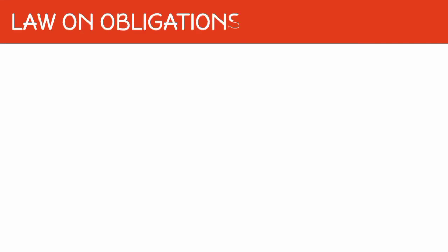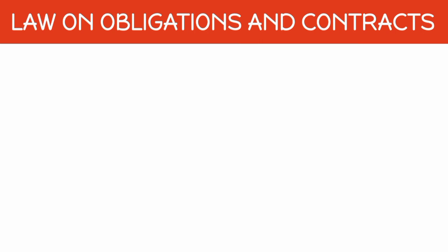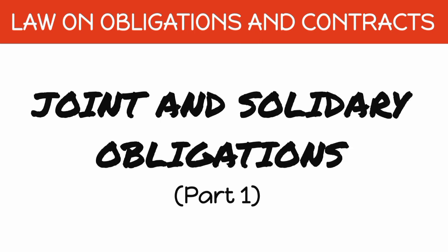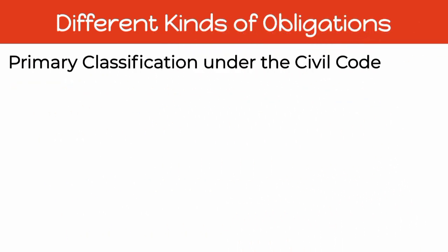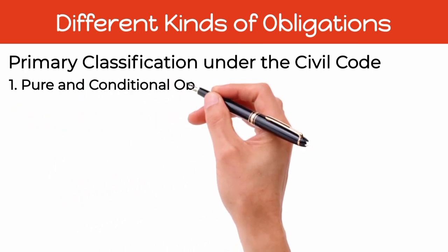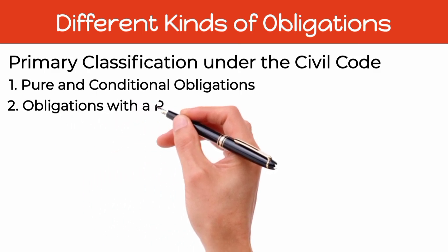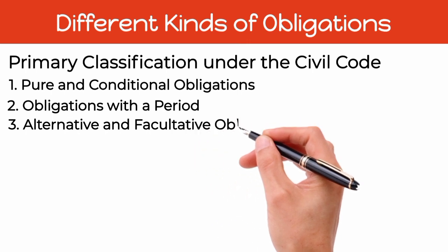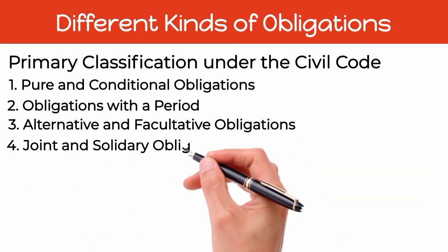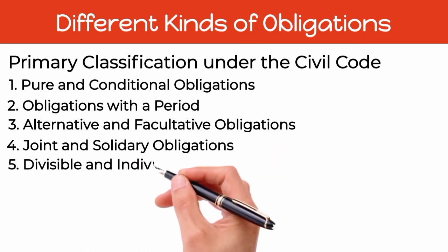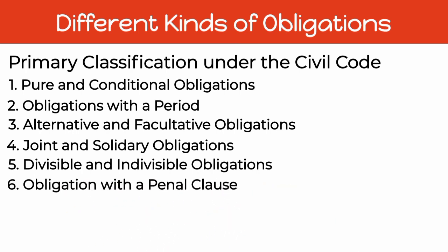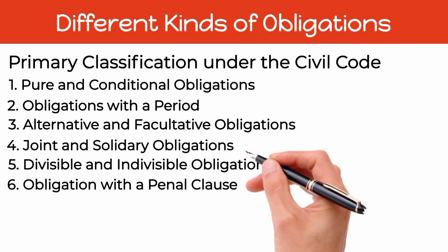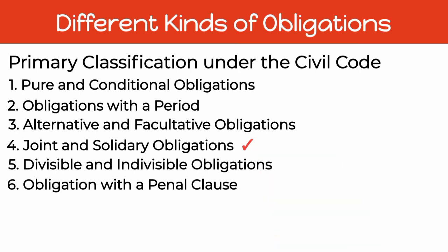Hello, everyone. This is your instructor in Law on Obligations and Contracts, and in this particular video, we will be discussing the first part of Joint and Solidary Obligations. Recall that there are different kinds of obligations under the Civil Code, namely: pure and conditional obligations, obligations with a period, alternative and facultative obligations, joint and solidary obligations, divisible and indivisible obligations, and obligation with a penal clause. In this particular video, we will be discussing the first part of number four, Joint and Solidary Obligations.